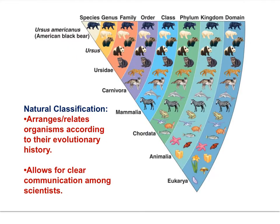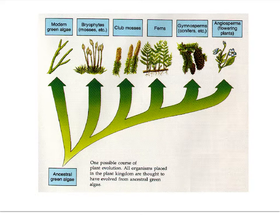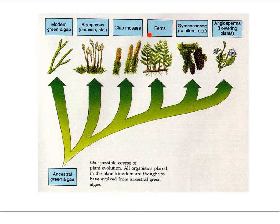Here is the classification of the black bear from domain to species — you have seen this slide already. This slide foreshadows the next movie in this evolution core series. There are four plant groups — four plant phyla — that you will need to know: the bryophytes (the mosses), the pteridophytes (the ferns), the coniferophytes (the conifers), and the angiospermophytes (the flowering plants).